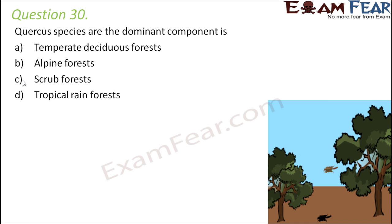Question number 30. Quercus species are the dominant component in temperate deciduous forests, alpine forests, scrub forests, or tropical rainforests? Quercus species are nothing but oak trees. Most oak trees shed their leaves during autumn, in warm summers or moderately cold winters. So they are seen in temperate deciduous forests, which experience warm summers and moderately cold winters.